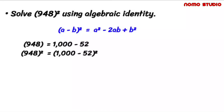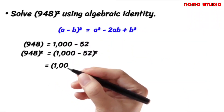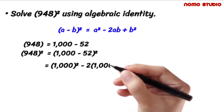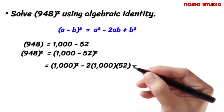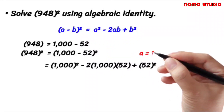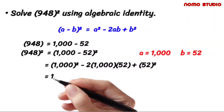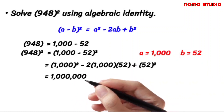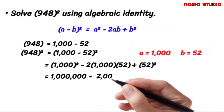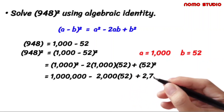Now let's solve using this identity. So we have 1000 squared, minus 2 times 1000 times 52, then plus 52 squared. Note that our a is 1000 and our b is 52. 1000 times 1000 is equal to 1 million. Then 2 times 1000 is 2000, multiplied by 52. And 52 squared is 2704.